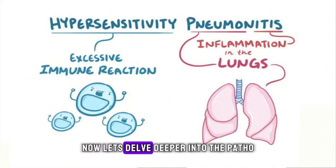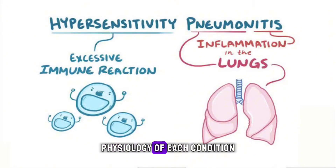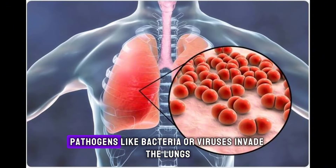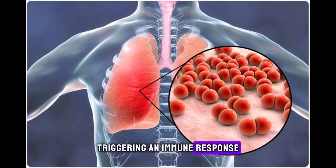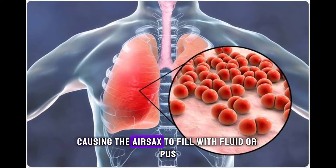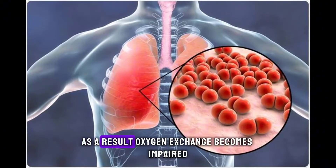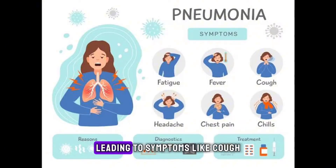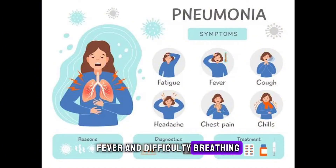Now let's delve deeper into the pathophysiology of each condition. In pneumonia, pathogens like bacteria or viruses invade the lungs, triggering an immune response. This leads to inflammation, causing the air sacs to fill with fluid or pus. As a result, oxygen exchange becomes impaired, leading to symptoms like cough, fever, and difficulty breathing.